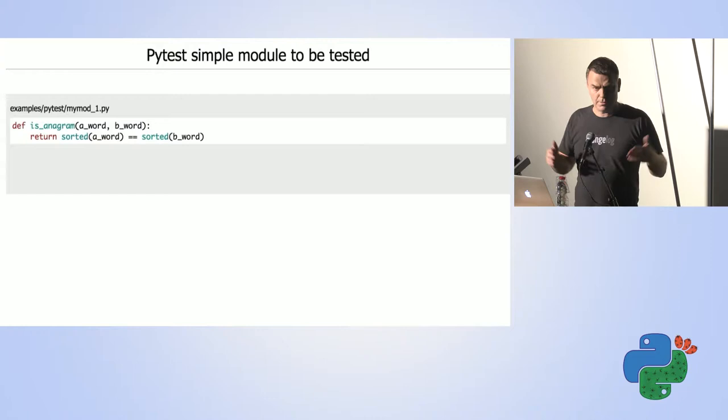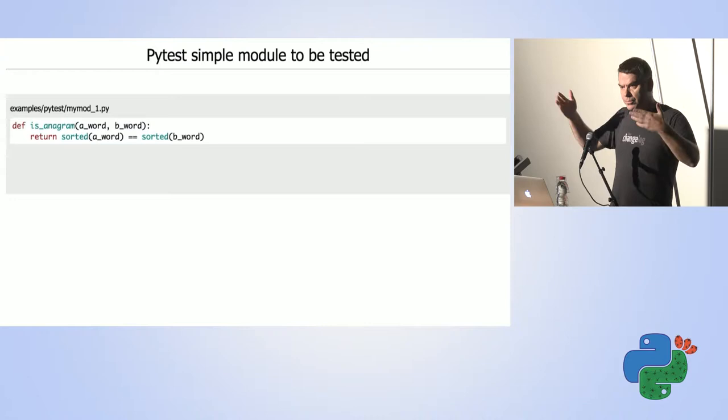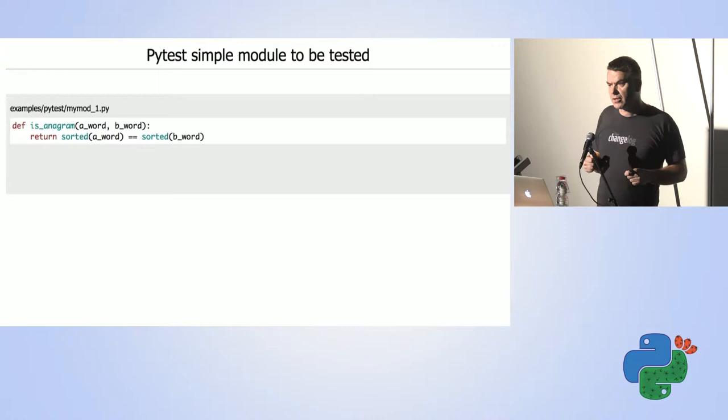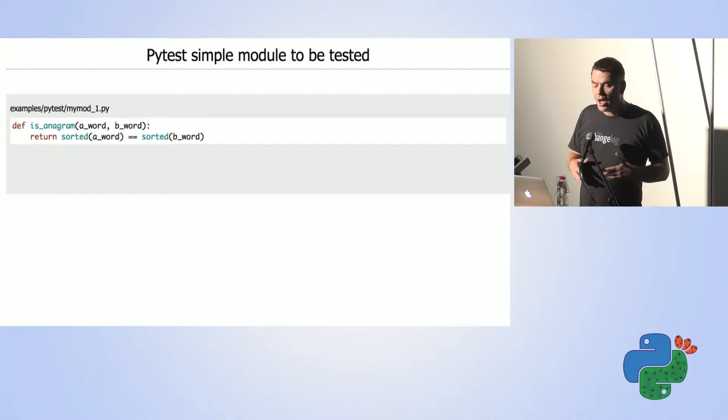Let's assume we have this Python module with a simple function called 'is_anagram', that checks whether two strings consist of the same letters. The implementation is rather simple — I just sort the characters and check whether the two lists are the same. How can we test this? We run the code, provide some input, and check whether the output is correct. So I write another file in which I import the module or a single function from the module that I'm testing.